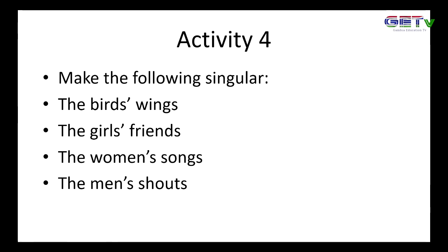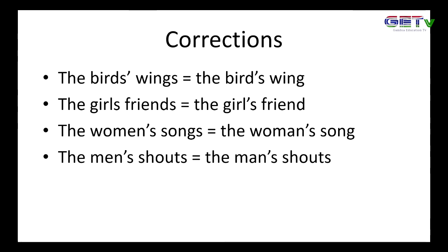Another activity: make the following singular. The birds' wings, the girls' friends, the women's songs, the men's shouts. The birds' wings becomes the bird's wing — singular, apostrophe S, and wings becomes wing. The girls' friends becomes the girl's friend — singular girl, apostrophe S, singular friend. The women's songs becomes the woman's song — woman's apostrophe S, songs becomes song. The men's shouts becomes the man's shout.